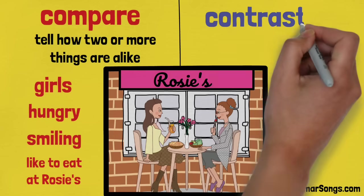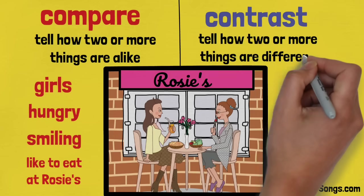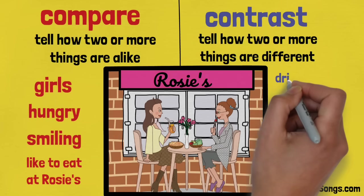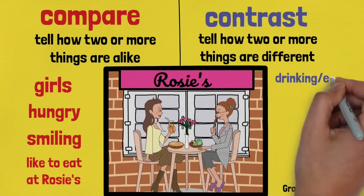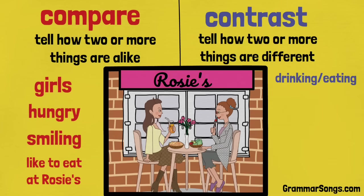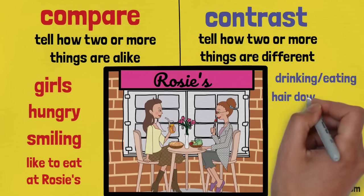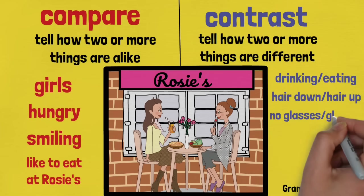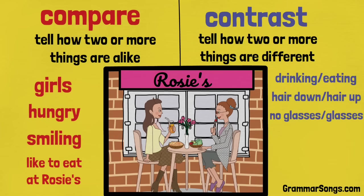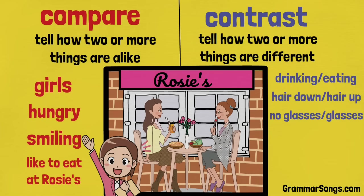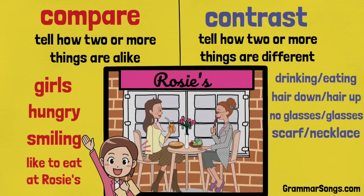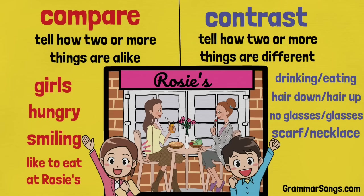To contrast is to tell how two or more things are different. For example, one girl is drinking while the other is eating. One girl wears her hair down while the other girl wears her hair up. One girl has no glasses, the other girl wears glasses. And one girl has a scarf, and the other has a necklace. And one girl has boots, and the other has shoes.